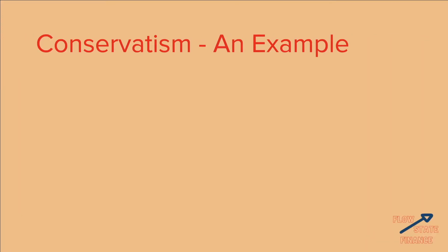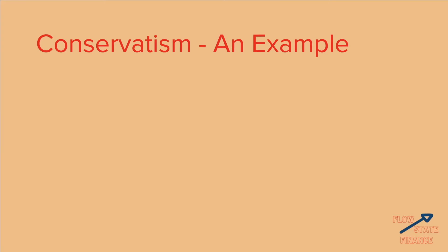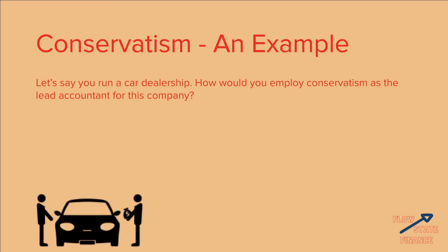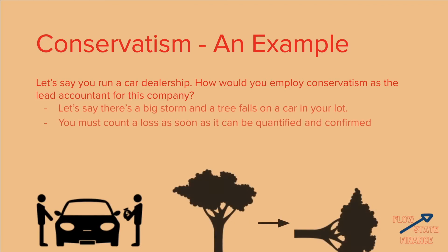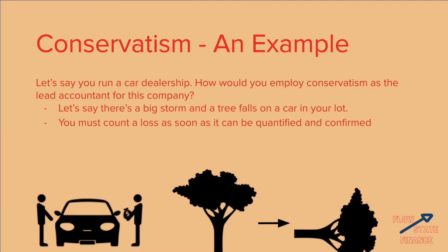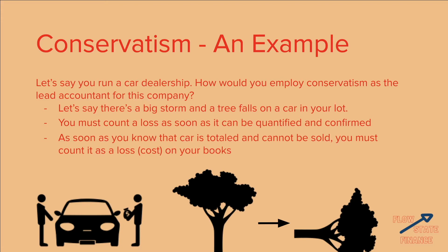Let's go through an example because this may not be fully clear. Let's say you run a car dealership. There's a big storm and a tree falls on a car in your lot. You have to count it as a loss as soon as you can quantify and confirm it — so as soon as you know that the car is totaled and cannot be sold, you have to count it as a loss on your books.